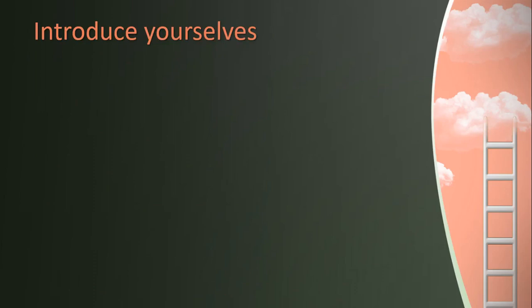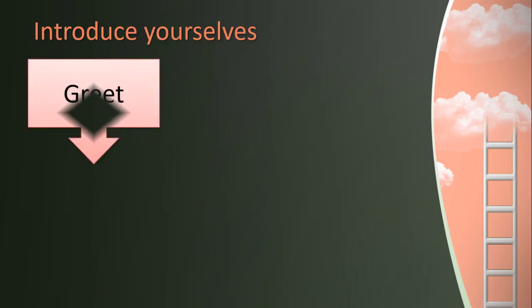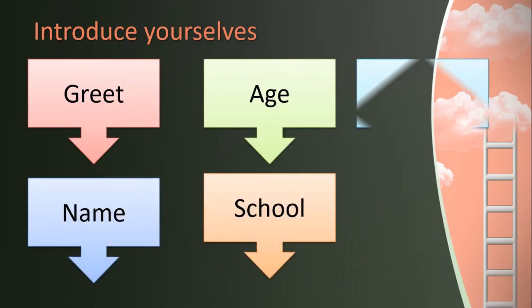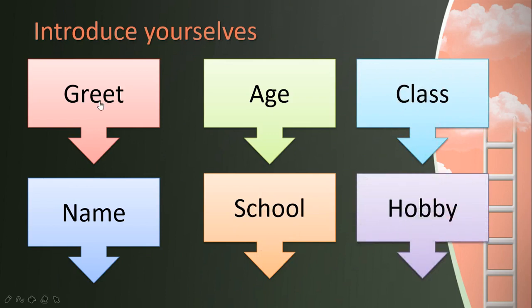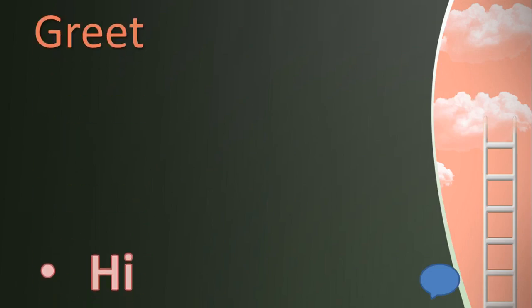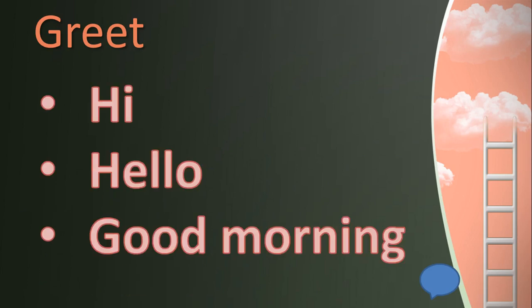Teacher will teach you how to introduce yourself with simple steps. You may use all these things to make your sentence and introduce yourself. Firstly, you need to greet. Greet means you are greeting your friend or your teacher. For example, you may use 'Hi Miss Waller', 'Hello Miss Waller', 'Good morning Miss Waller'. You may use all these greetings. For your friend also: 'Hi Anna', 'Hi John'. So hi, hello, good morning, or anything else you can use to greet people.